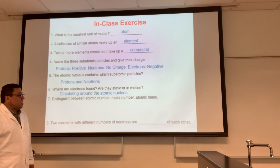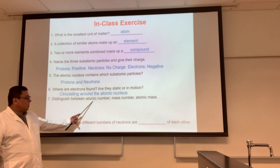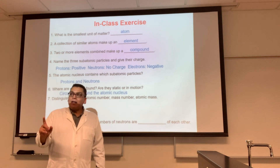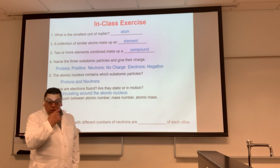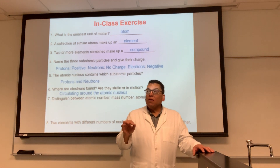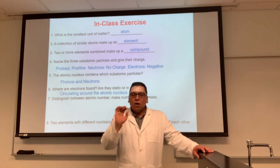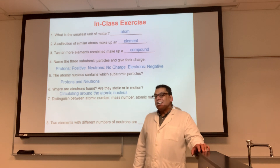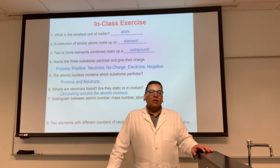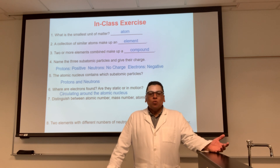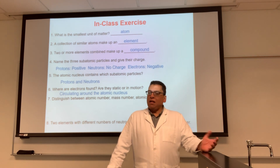Distinguish between atomic number, mass number, and atomic mass. Atomic number tells you the proton number only. Mass number tells you protons plus neutrons. Atomic mass tells you their weight. Very important point: the element's mass is the combined mass of the protons plus neutrons. Why not the electrons? Because the electron's mass is negligible — you can ignore it. For example, carbon's atomic mass is 12.011 — that's the combined mass of neutrons plus protons, nothing to do with electrons.